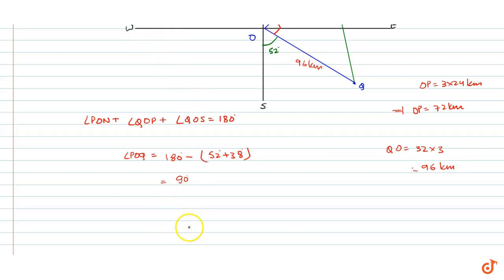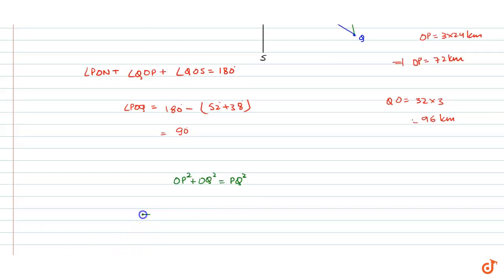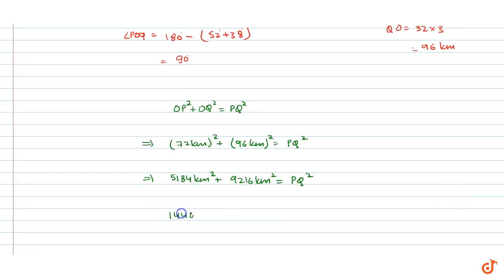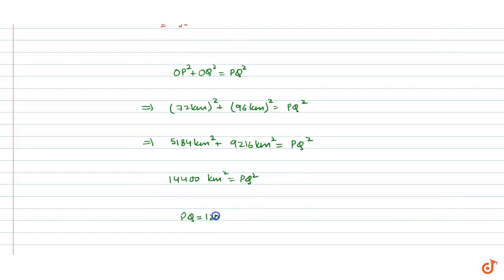Now we have a right-angle triangle, so we apply the Pythagorean theorem. PQ squared equals 72 squared plus 96 squared. That is 5184 km² plus 9216 km², giving us PQ² equal to 14400 km². Therefore PQ equals 120 kilometres.